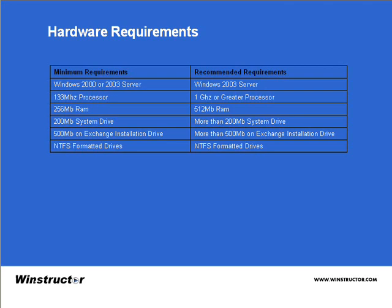To install Exchange itself, you're going to need at least 200 megs of free disk space on your system drive and 500 megs free on the drive where you plan to install Exchange. Again, and it probably goes without saying, these are minimums. Plan to have a lot more disk space than this.